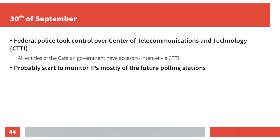On the 30th of September, one day before the referendum, federal police took over the CTTI — the Centre of Telecommunications and Technology. Nearly all the polling stations that day were entities of the Catalan government, especially schools and medical stations, and their internet connection all goes through CTTI. They probably did this to monitor the IPs and see what traffic would happen on polling stations.